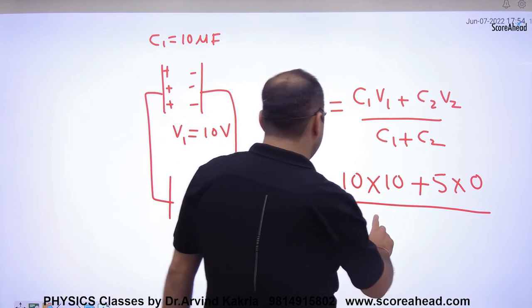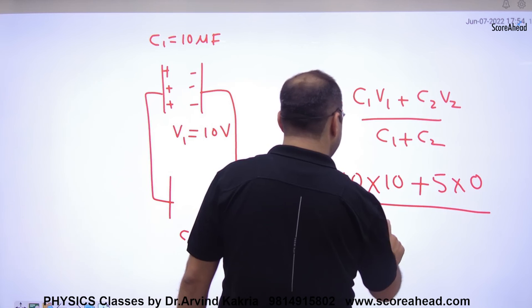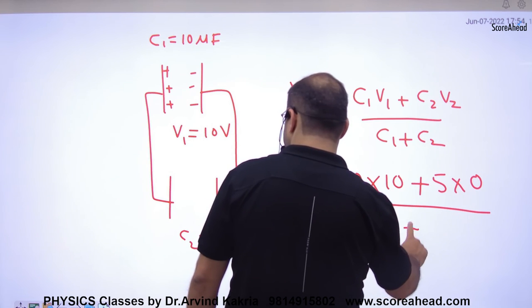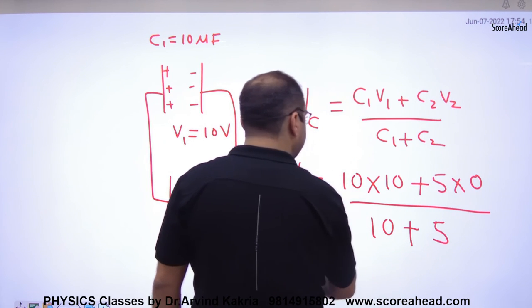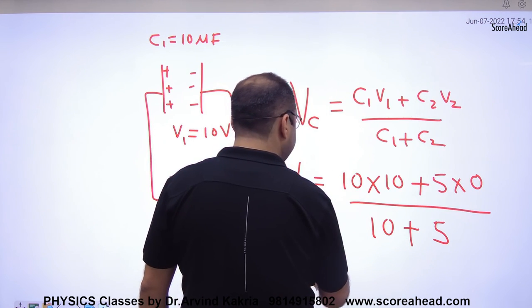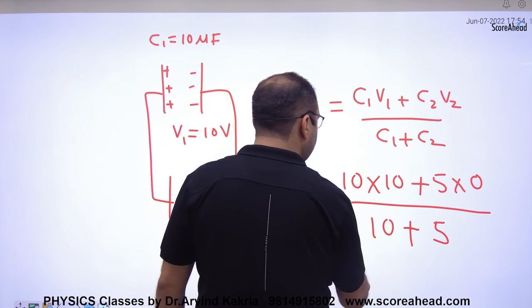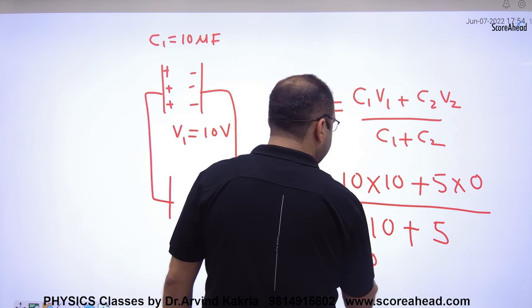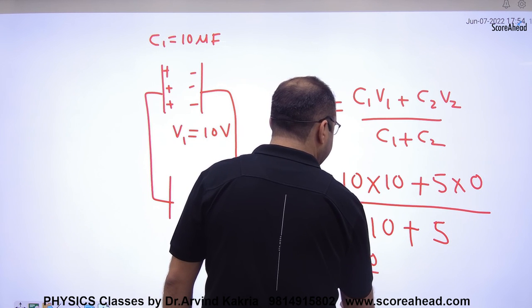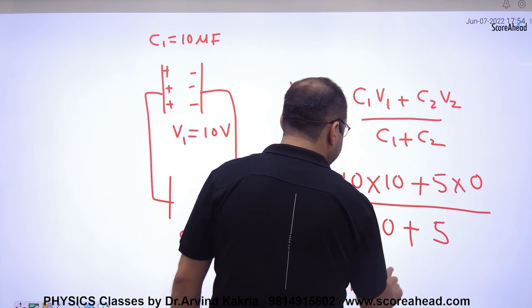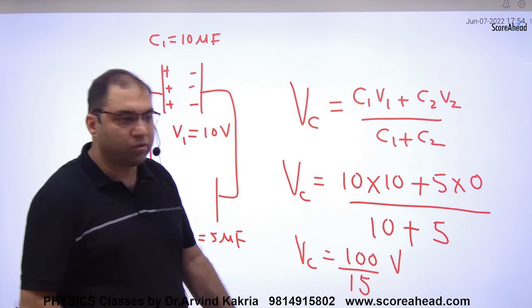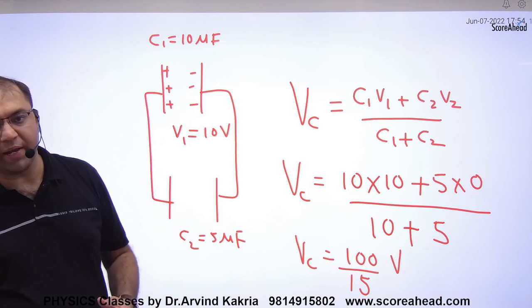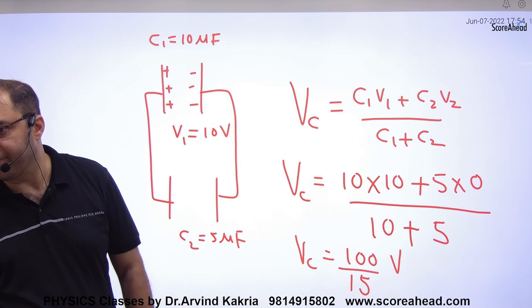So V = 100 / 15 volts is the answer. That is how common potential is calculated. Any doubts? Is it clear?